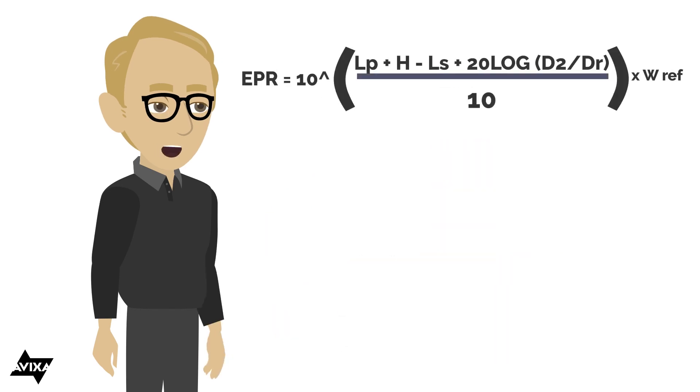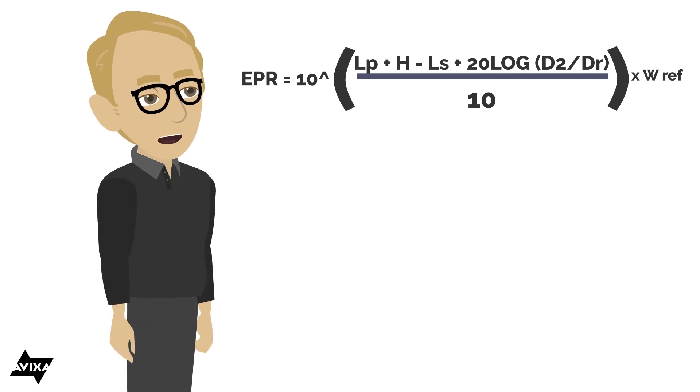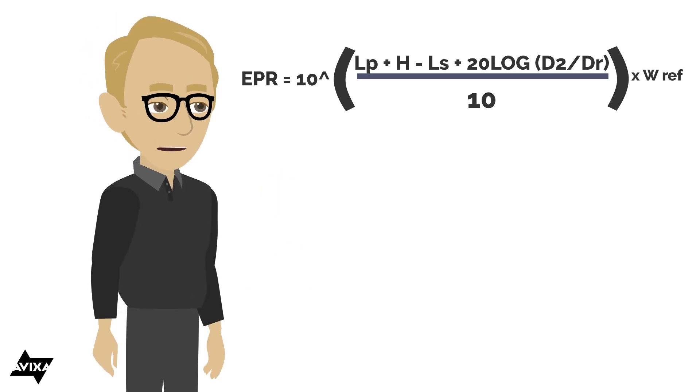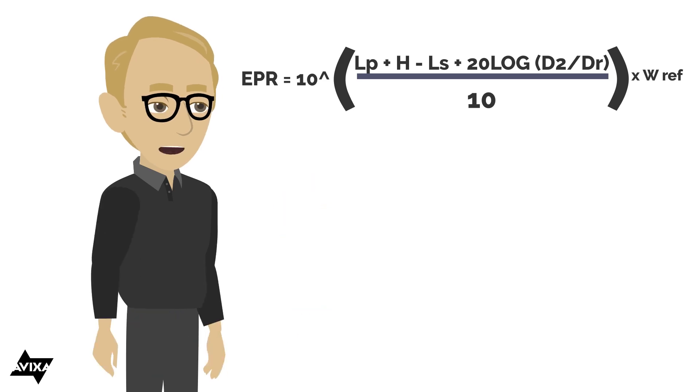You'll see here EPR equals 10 to the, and everything within the parentheses is all an exponent, so we'll see how to work that out on the calculator. You can see here at the end times the wattage reference, and unless it's stated otherwise, that's just going to be a wattage reference of one.